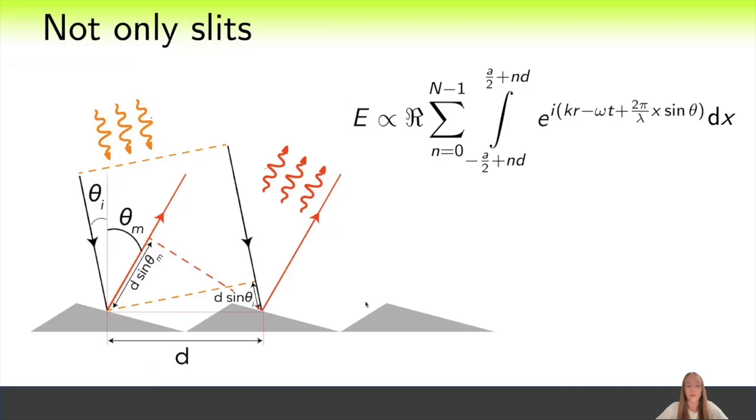However, now we don't have a set of slits, but some periodic structure, which can be of arbitrary shape, and in general the integral may not be solvable. But you can check that if you add any periodic function under the integral, after expanding it into the Fourier series, at least the condition for the maxima remains the same.